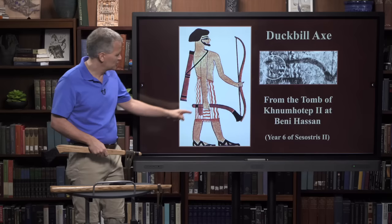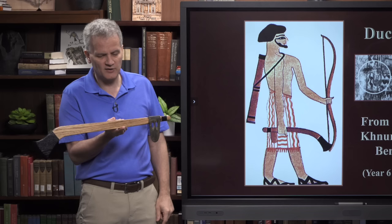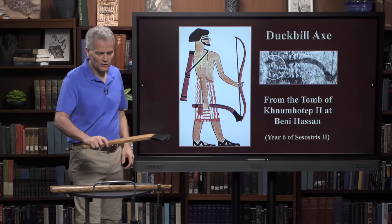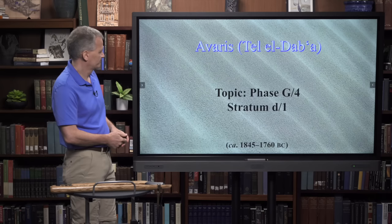There's a picture of a duckbill axe being held in the tomb of Khnumhotep II at Beni Hassan, dated to year 6 of Sesostris II - the king associated with the abundance in Egypt. You can see the center of gravity is at the position close to the duckbill, and that's exactly where the figure in the painting is holding it. Having now handled this actual axe with a modern handle, I can confirm it's very historically accurate what's depicted on this tomb wall painting at Beni Hassan.